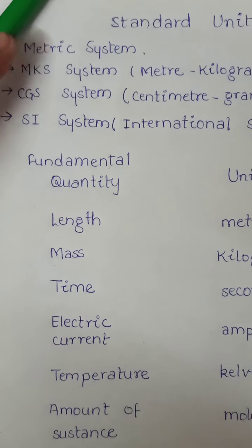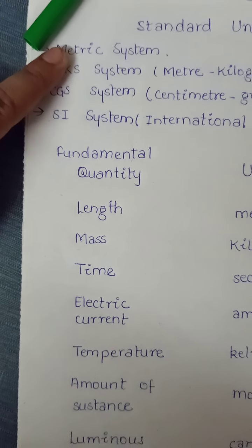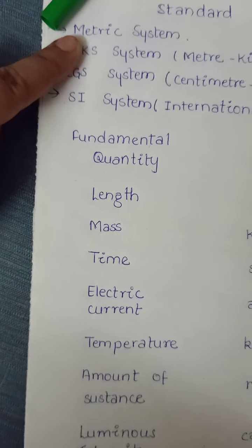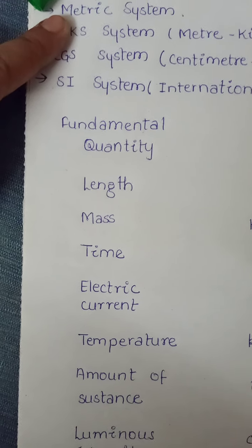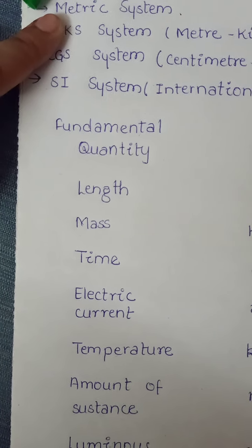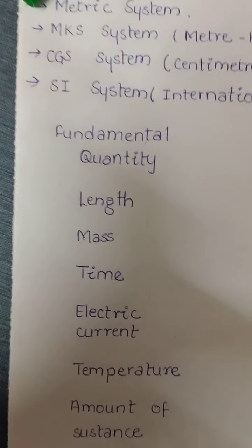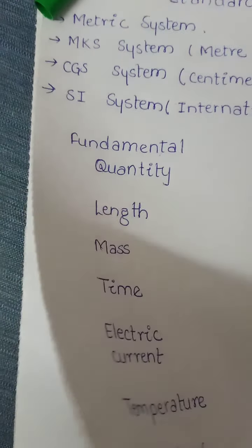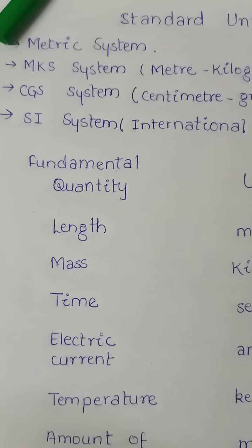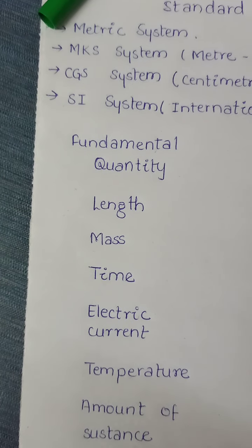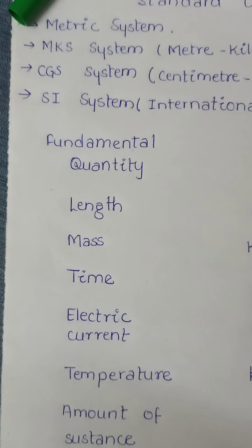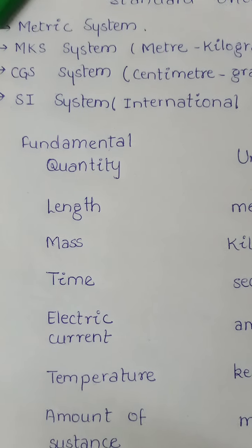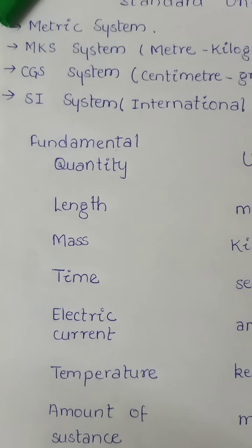In this system, the unit of length was named as meter. Hence, the system came to be known as the metric system. The unit of mass was named as gram, and the unit of capacity or volume was named as liter. So, this is the metric system.